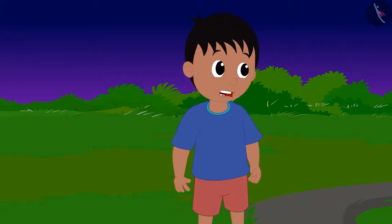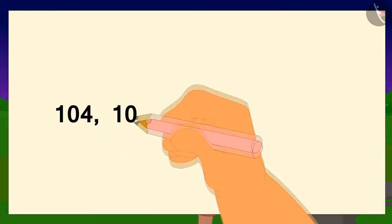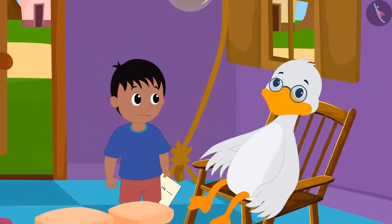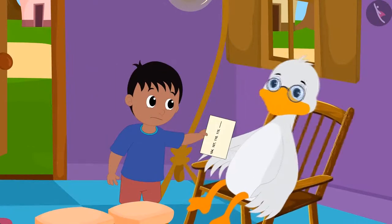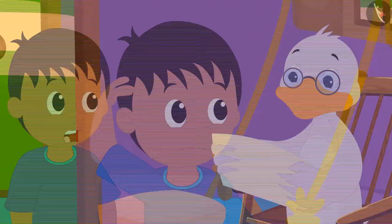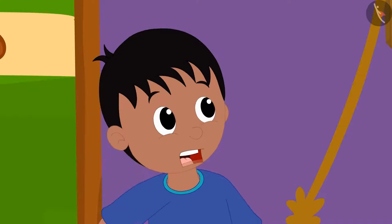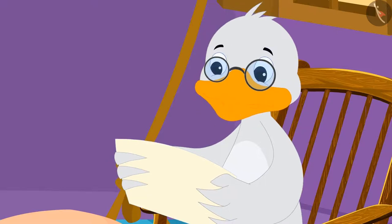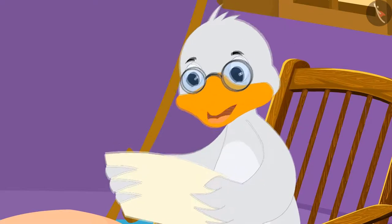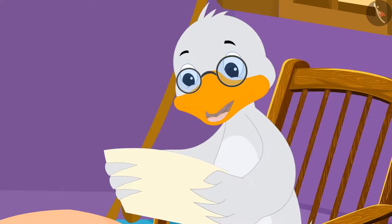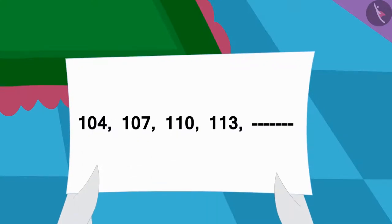This is a strange code. Raju wrote the code on a paper and ran fast to Big Mouth Duck uncle in search of the answer. Uncle said, 'This looks like a number pattern.' Raju asked, 'Uncle, what is a number pattern?' Uncle explained: 'A list of numbers that follows a certain order or pattern is called a number pattern. Here's your number pattern.'